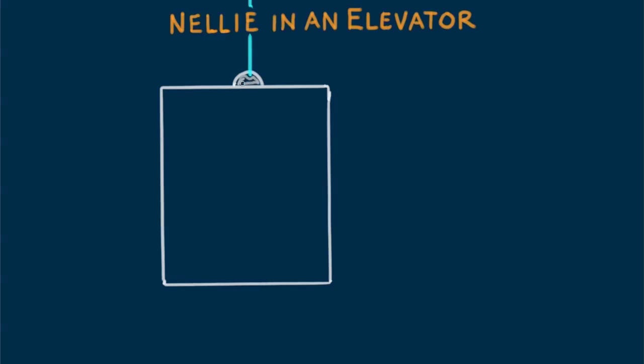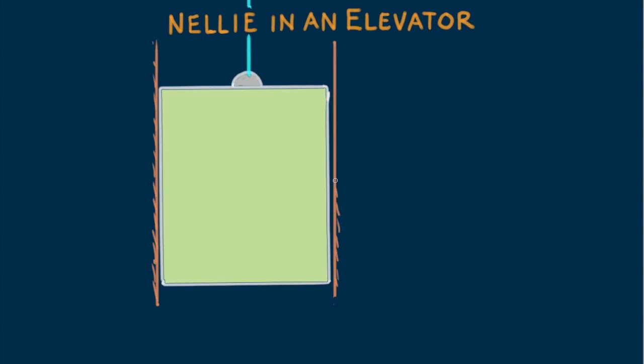Little Nellie Newton hangs by a rope attached to the ceiling of an elevator. The elevator is at rest. What are the forces acting on Nellie?